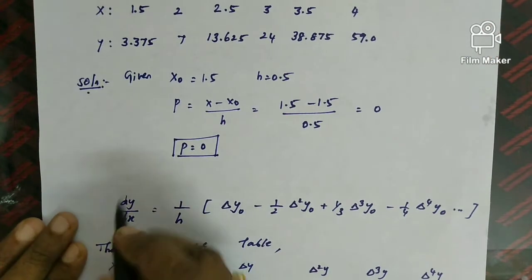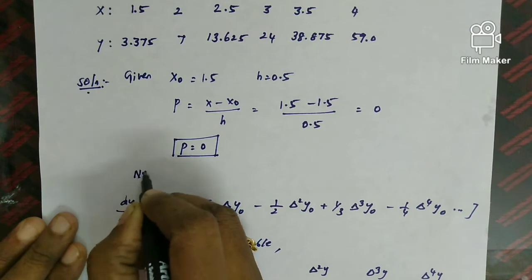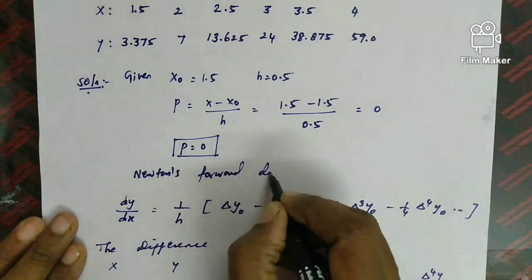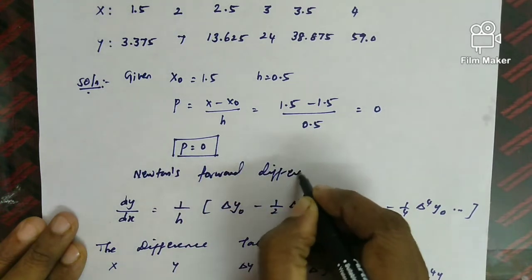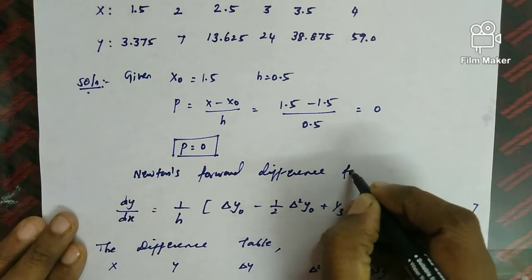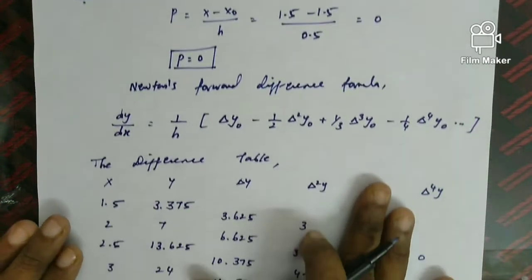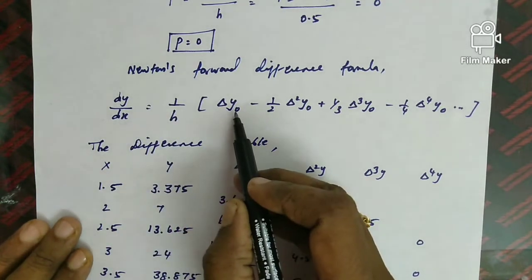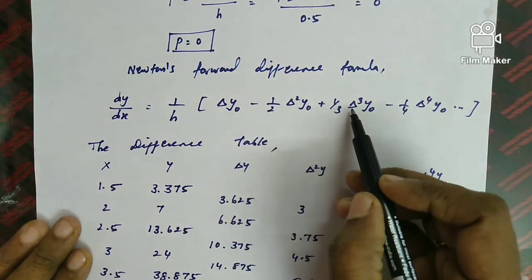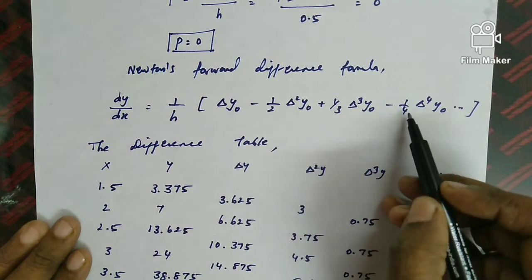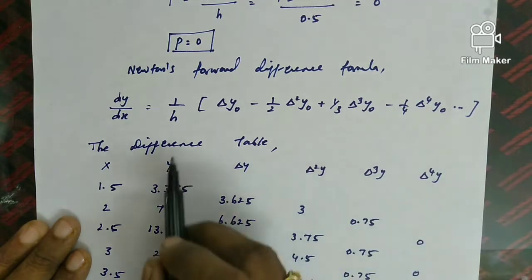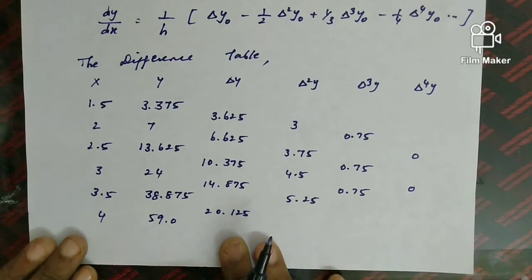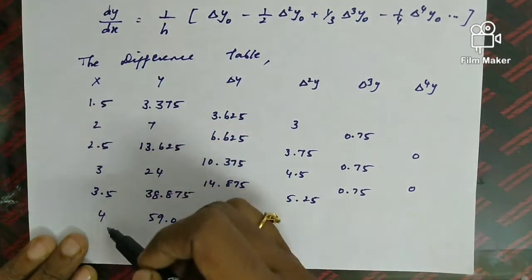Newton's forward difference formula for dy/dx when P = 0 is: dy/dx = (1/h)[Δy₀ − (1/2)Δ²y₀ + (1/3)Δ³y₀ − (1/4)Δ⁴y₀]. We will now build the difference table to apply this formula.